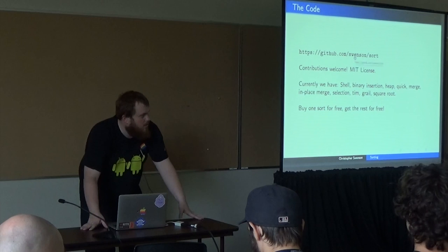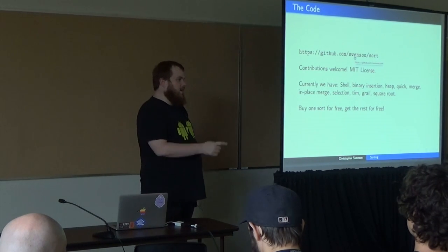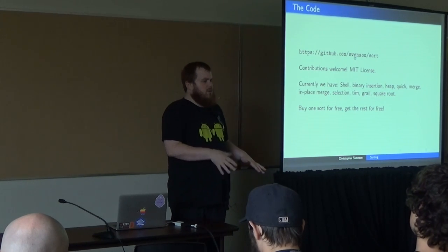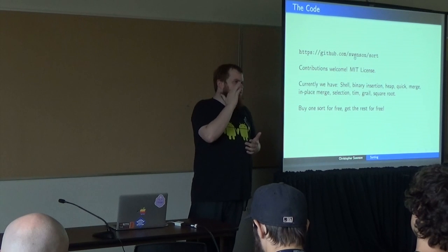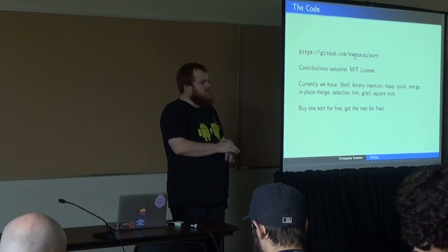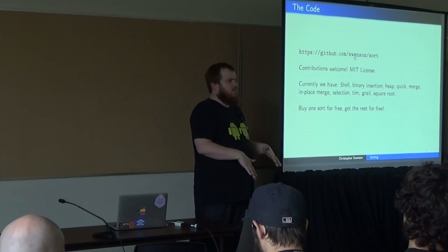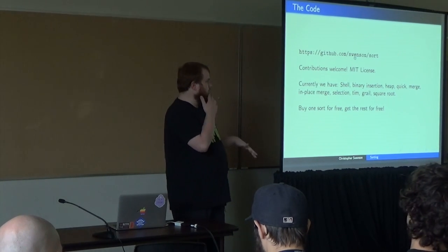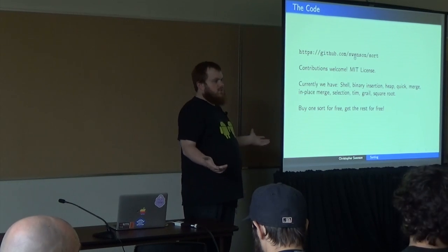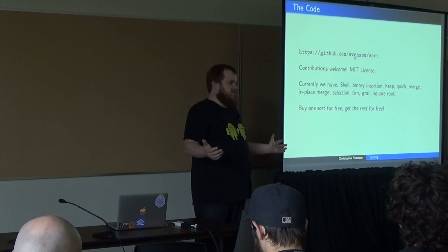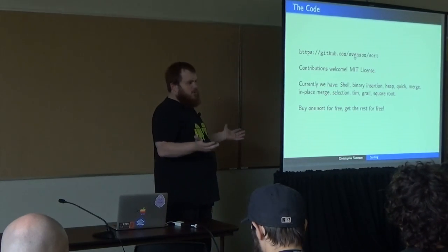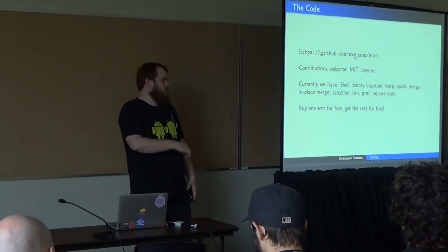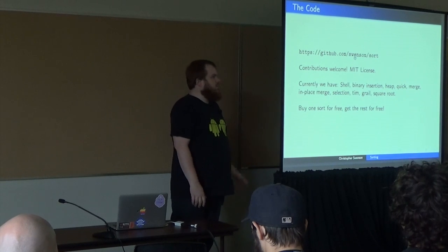The grail sort and square root sort are based on a paper from the early 90s on doing merge-sort-style operations in constant space — square root space rather than logarithmic space. I haven't really done a thorough code review of them. They don't have cool well-known names like the other sorts, and I haven't thoroughly tested how they perform against an optimized quicksort. It's something I'd love to dig into more — I did this mostly on my own time for fun, to learn how sorting works.